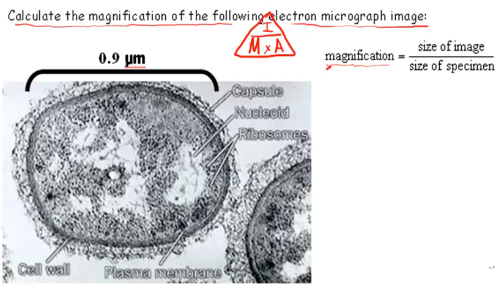So here we go. I start with my formula: magnification equals image size over the actual size. I want to calculate the magnification, so here is my unknown. In order to calculate this, I need to know the image size and I need to know the actual size.